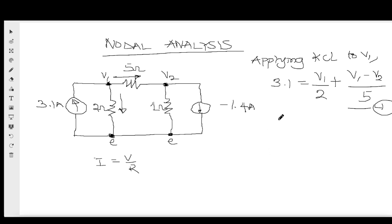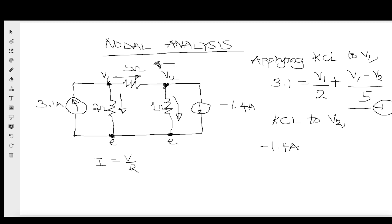The second equation applies KCL at V2. The current source of minus 1.4 A is going out, and we also assume the resistor currents are going out. So all three terms are on the same side: −1.4 + V2/1 + (V2−V1)/5 = 0, since nothing is entering node V2. This is equation two.